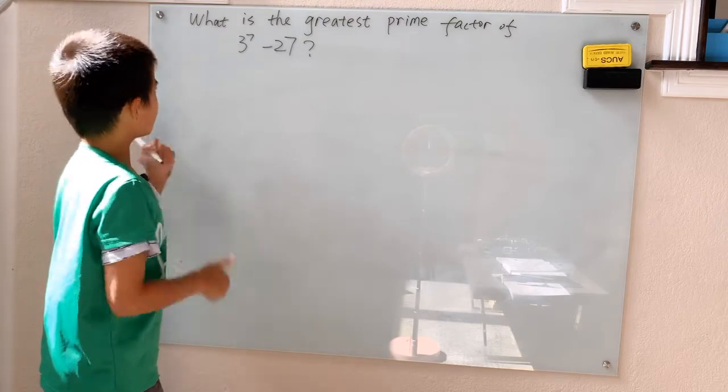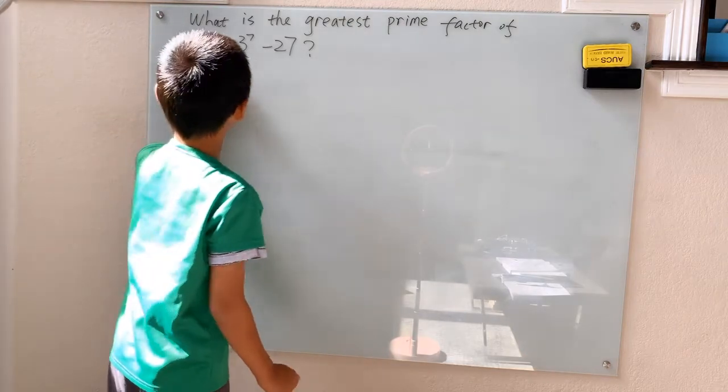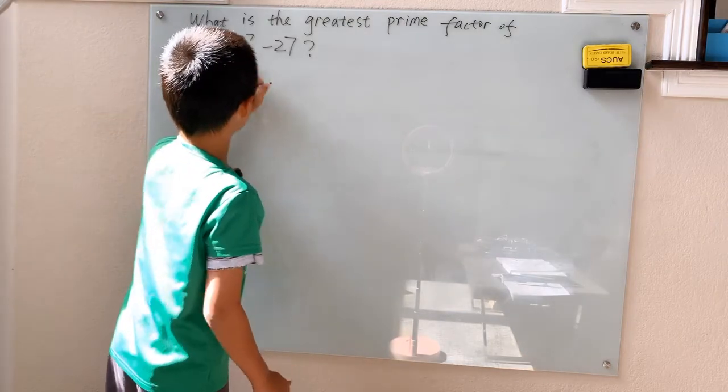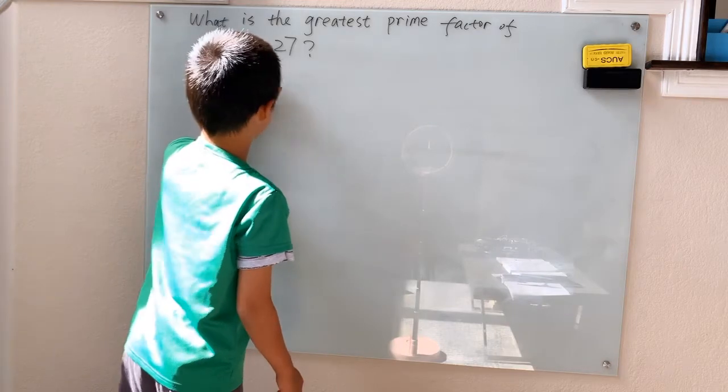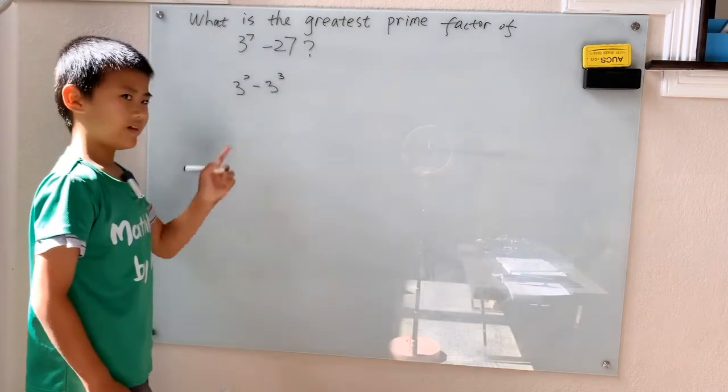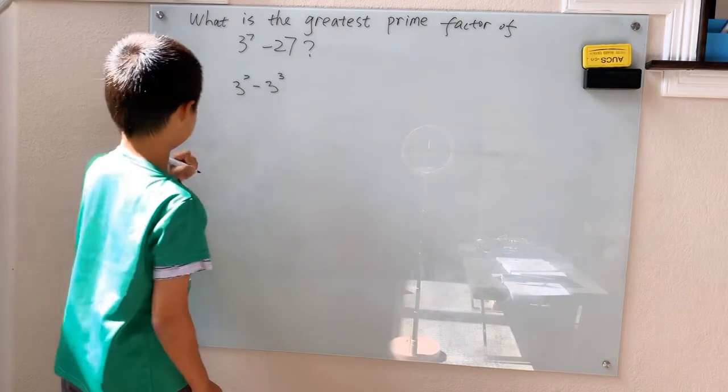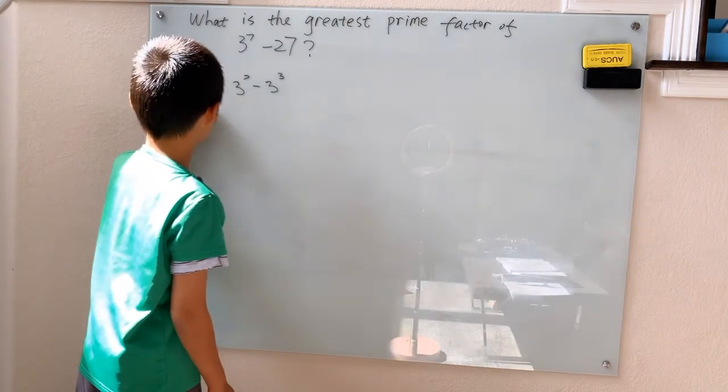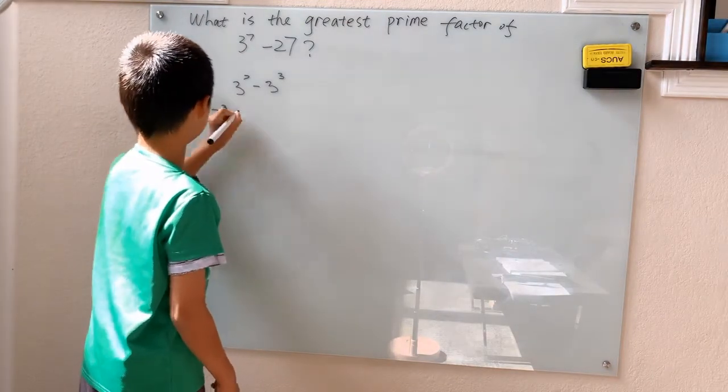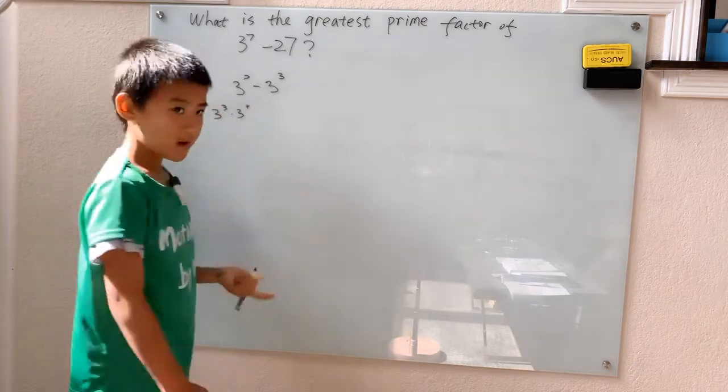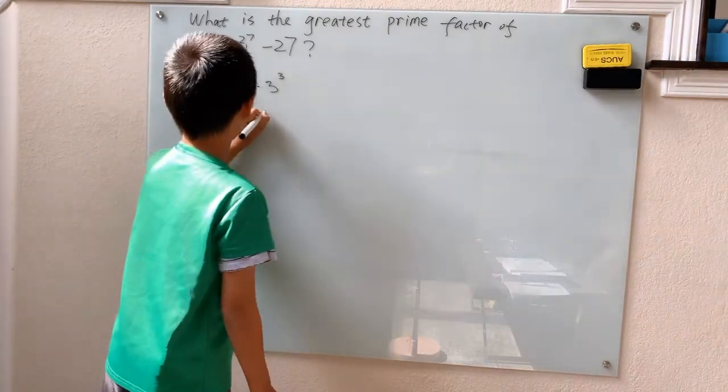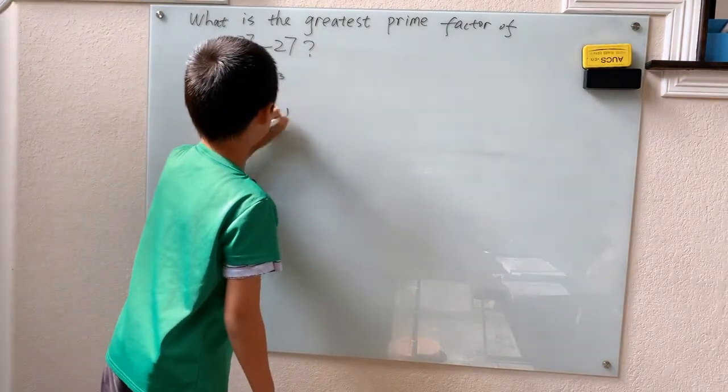Well first, I think if I write 27 as 3 cubed, I can factor this equation. If you don't see how, you can just write 3 to the 7th as 3 cubed times 3 to the 4th minus 3 cubed times 1.